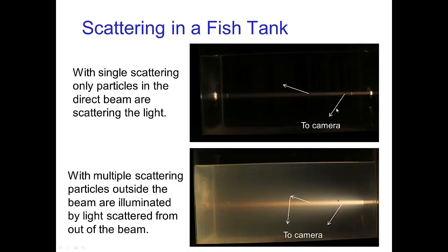We can understand the halo by comparing the two cases: with single scattering, we only see light scattered directly from the beam. With multiple scattering, light can scatter out of the beam and then scatter again — that's what we see in the halo. Some of the light within the beam itself is also multiply scattered.